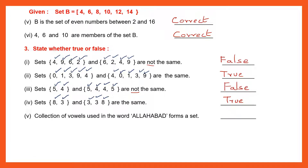Question 5: Collection of vowels used in the word 'Allahabad' forms a set. What are the vowels in 'Allahabad'? We have only A. So the set is {A}. This is a valid set, so this statement is true.